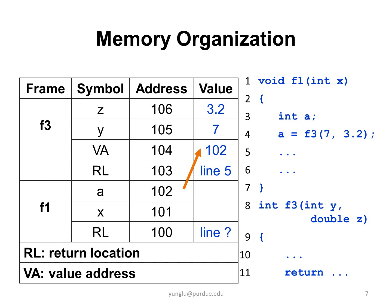This slide shows how memory is actually organized. Everything in the memory is an address. In this particular example, the local variable A inside function F1 has address 102. When F3 is called, the value address for A is 102 and it is stored in the stack memory.